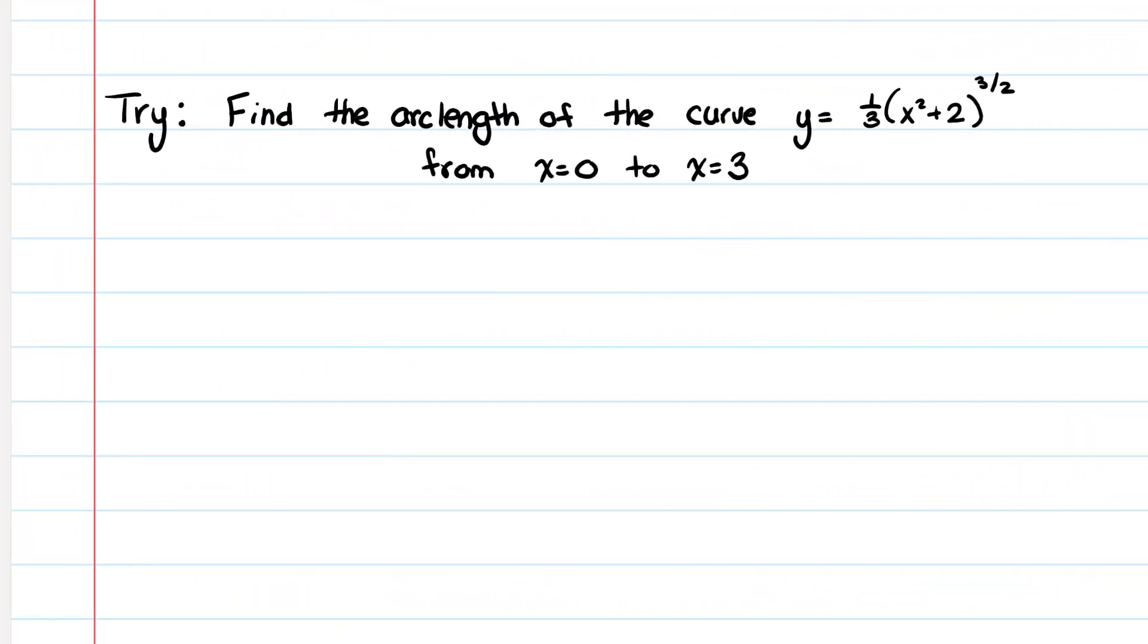Alright, so I know I'm going to need the derivative, so I'm just going to do that first. I get 1 third x squared plus 2 to the 3 halves. So the derivative is 1 third times 3 halves x squared plus 2 to the 1 half times 2x because of the chain rule. Do not forget that chain rule, it's very important. These 3s cancel, these 2's cancel. So I get y prime is equal to x, x squared plus 2 to the 1 half.